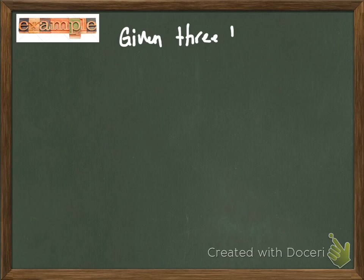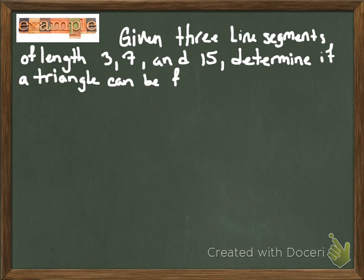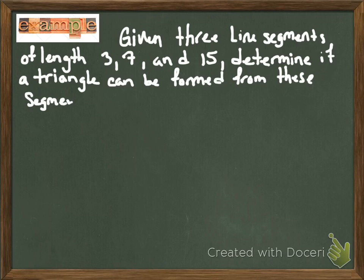So here is our last example that we're going to take a look at. So it says, given three line segments of lengths 3, 7, and 15, determine if a triangle can be formed from these line segments. So you're trying to determine whether or not a triangle can actually be formed. If you were to place all three of these line segments, connect them and form vertices, you're trying to figure out if you'd be able to form a triangle. And this is very simple, guys. Again, you're going to use the triangle inequality theorem, which again says that if you were to add two or more sides of any triangle, then that sum will be larger than the third.